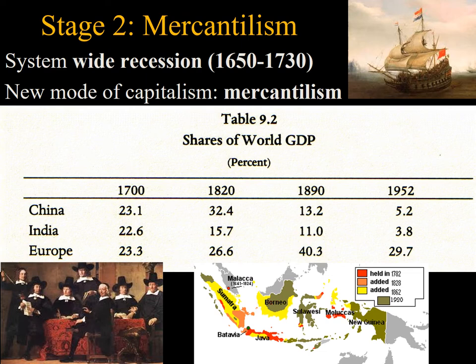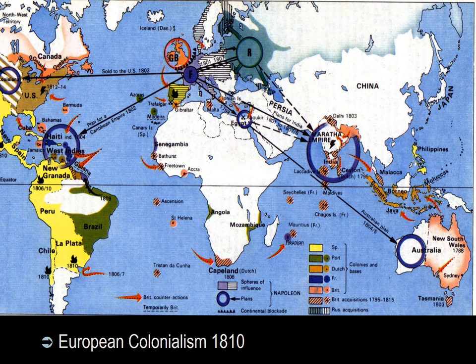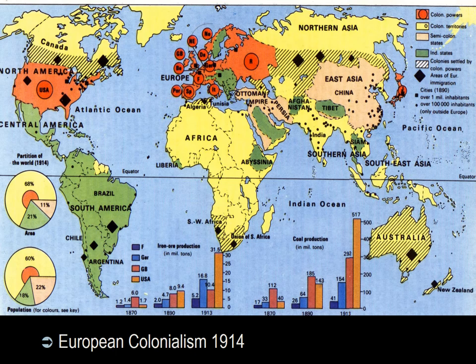The second stage of capitalism emerged from a system-wide recession of 1650 to 1730, resulting in a new mode of capitalism focused on mercantilism with its emphasis on the need for colonies, contested by the Dutch, English, and French. By 1810, European colonial conquests were extensive — the British had not yet fully conquered India, and southern Argentina remained unoccupied. By 1914, European colonial possessions had expanded dramatically.